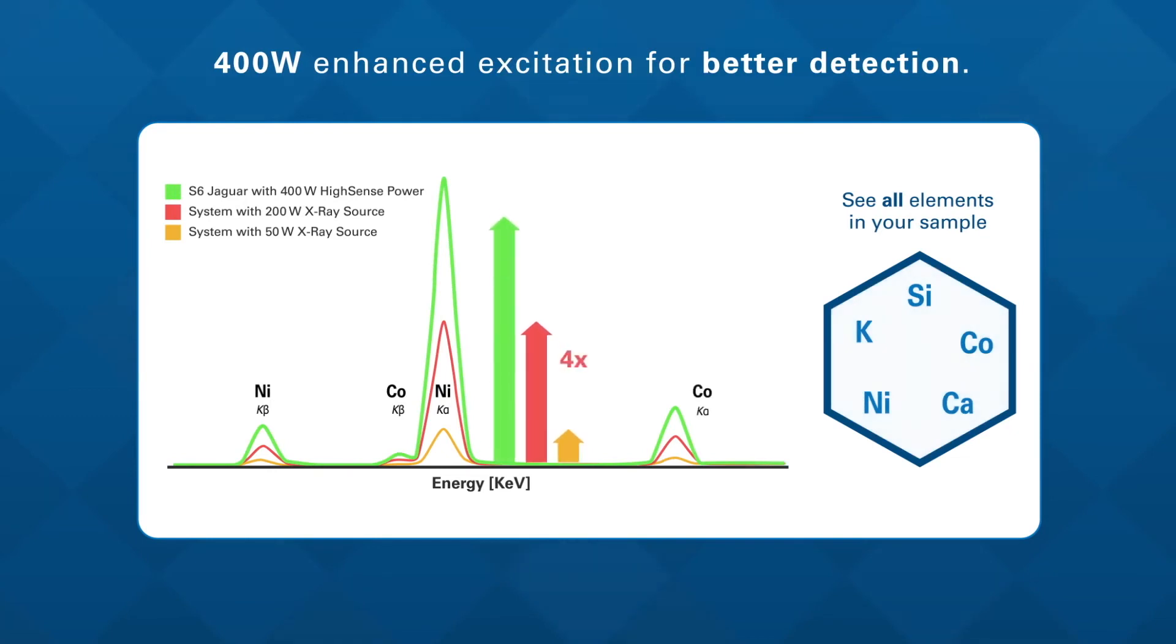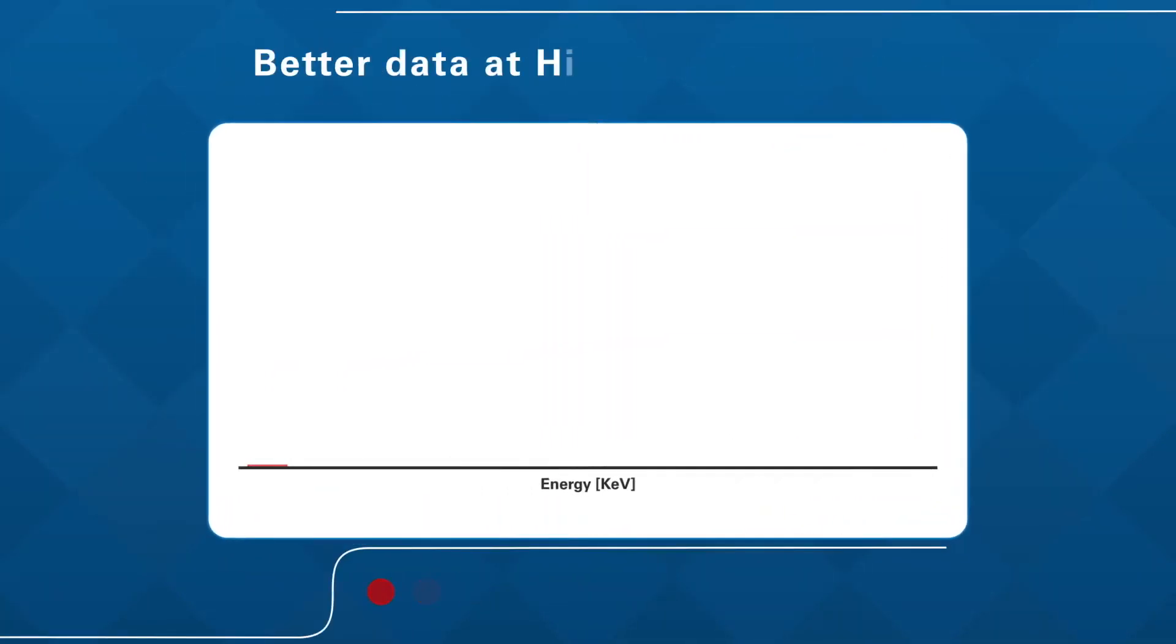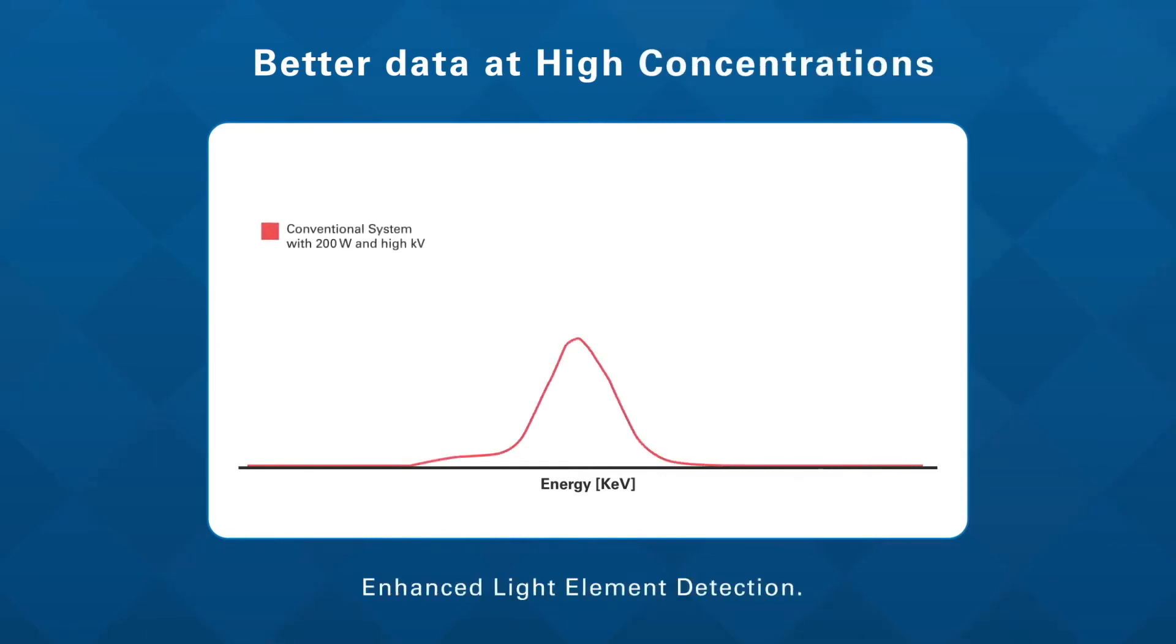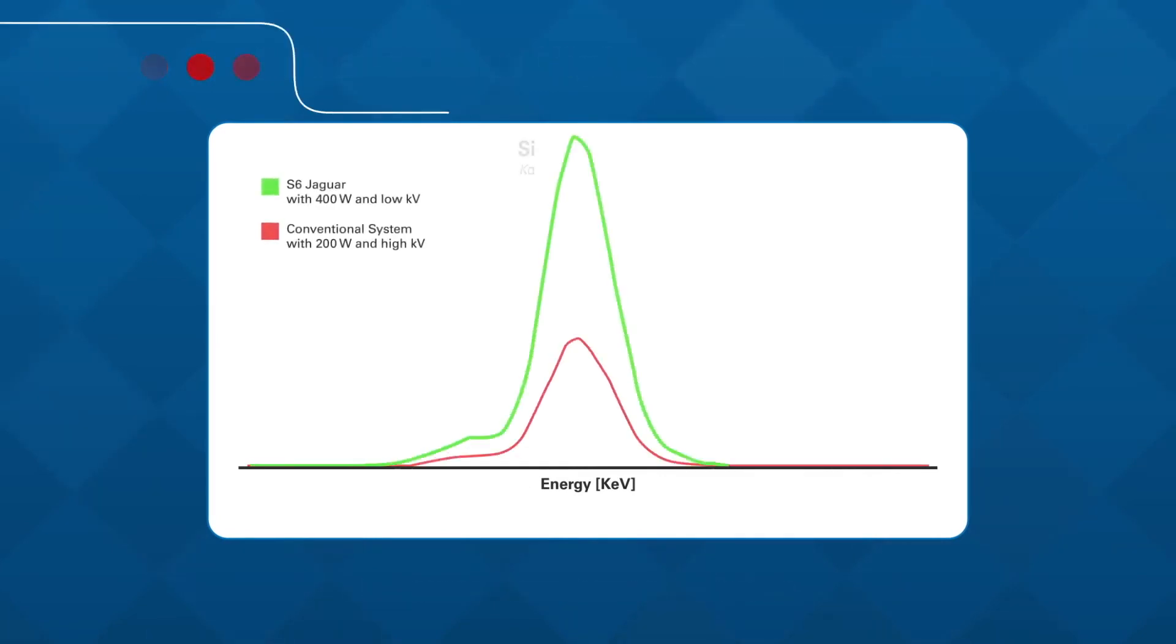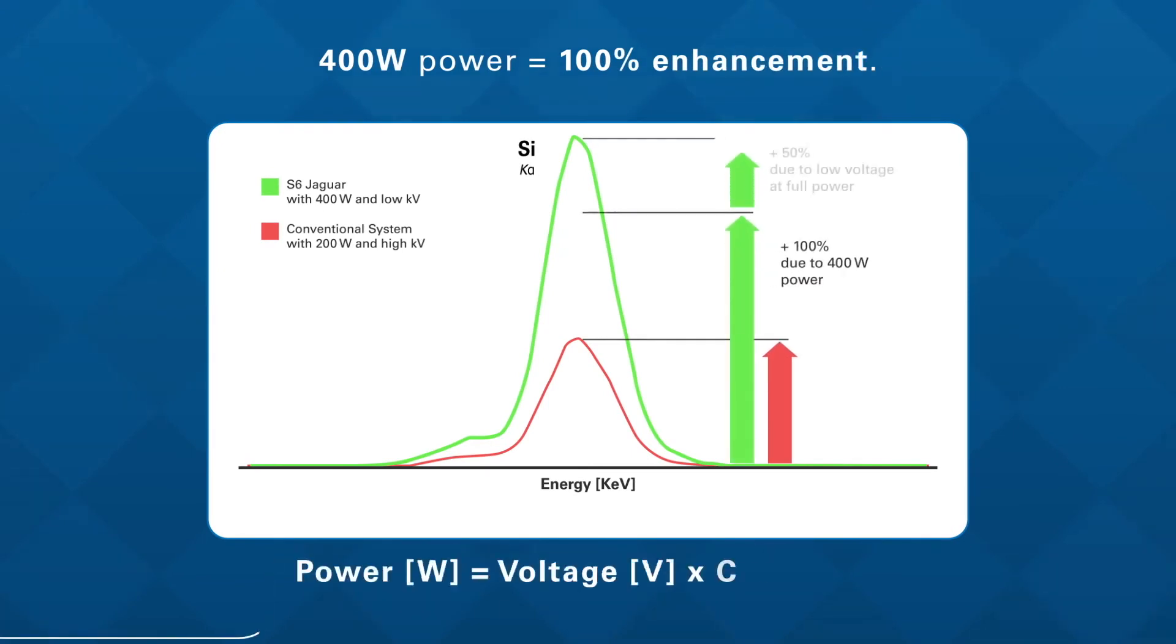S6 Jaguar offers three times more intensity due to optimized excitation with low voltage at full power. That's because when it comes to Hisense, more power leads to higher precision and faster speed.